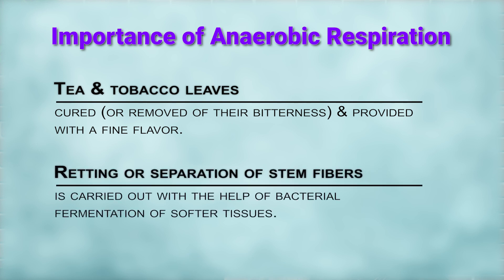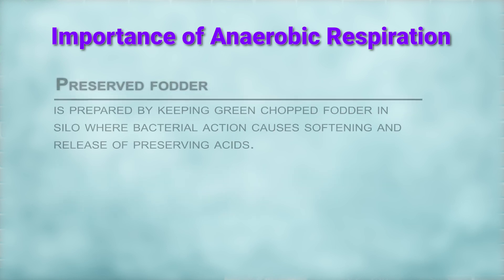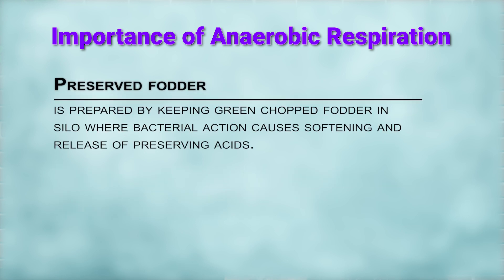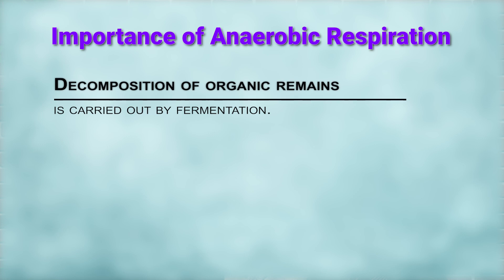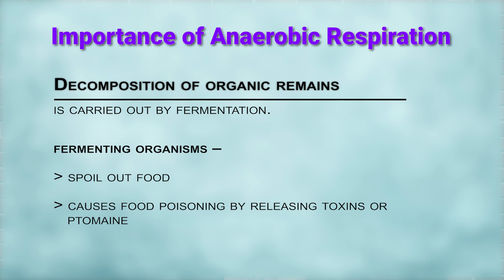Retting or separation of stem fibers is carried out with the help of bacterial fermentation of softer tissue. Preserved fodder is prepared by keeping green chopped fodder in a silo where bacterial action causes softening and releasing of preserving acid. Cleaning of raw hides is a fermentative bacterial activity. Decomposition of organic remains is carried out by fermentation. Fermenting organisms can spoil food and cause food poisoning by releasing toxins or ptomaines.